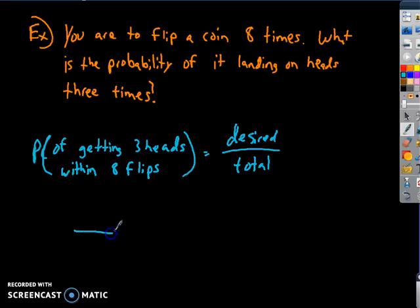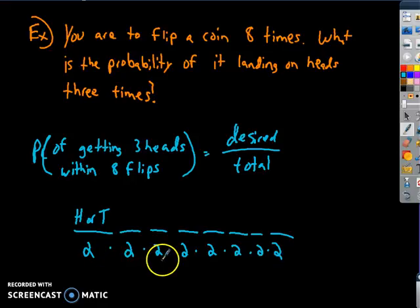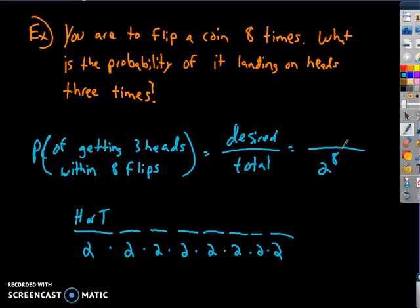If you flip a coin, every time you flip it, it could be heads or tails. So I've got two options for my first flip. I'm going to flip it eight times, so that's two options for each flip, and so forth. Essentially that's eight twos, so I've got total possible outcomes of two to the eighth power. So my total possible outcomes is two to the eighth.